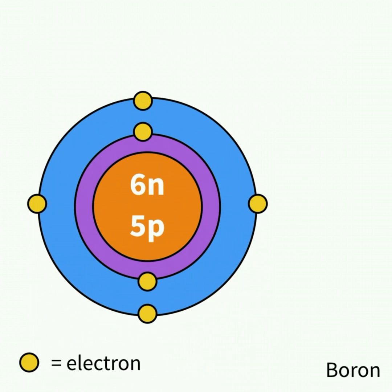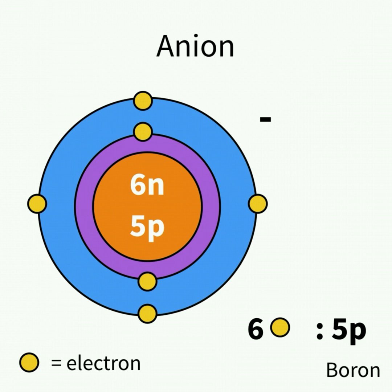An ion can be negatively charged if there are more electrons than protons. These are called anions.